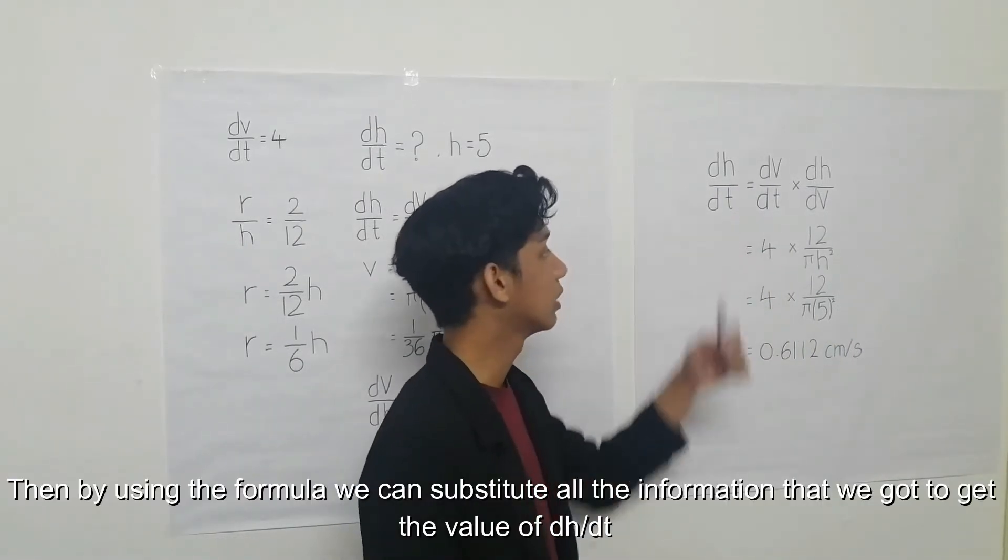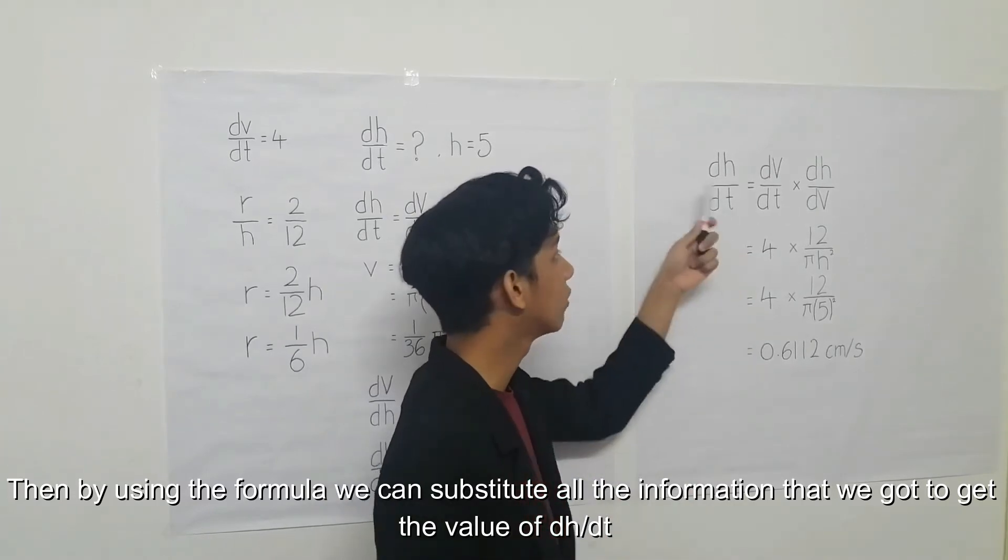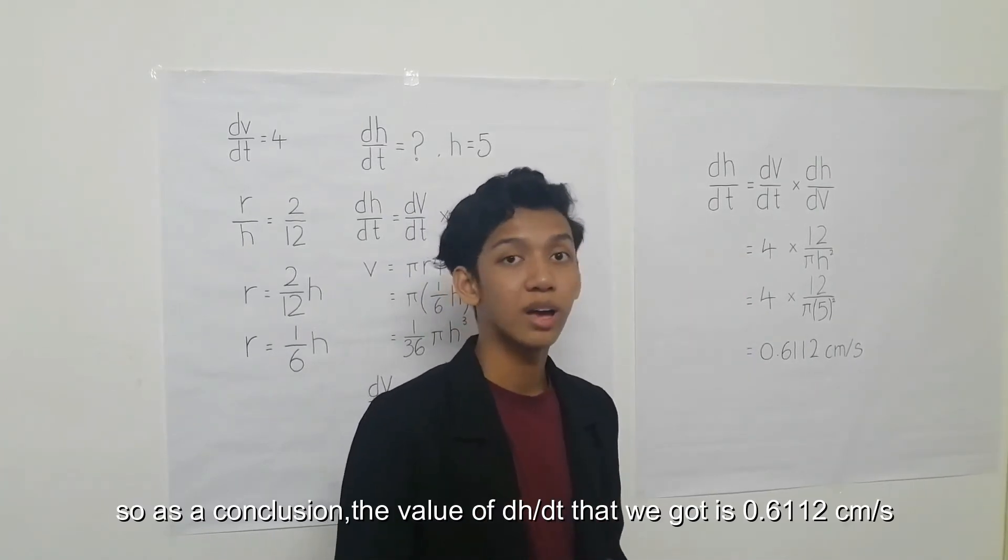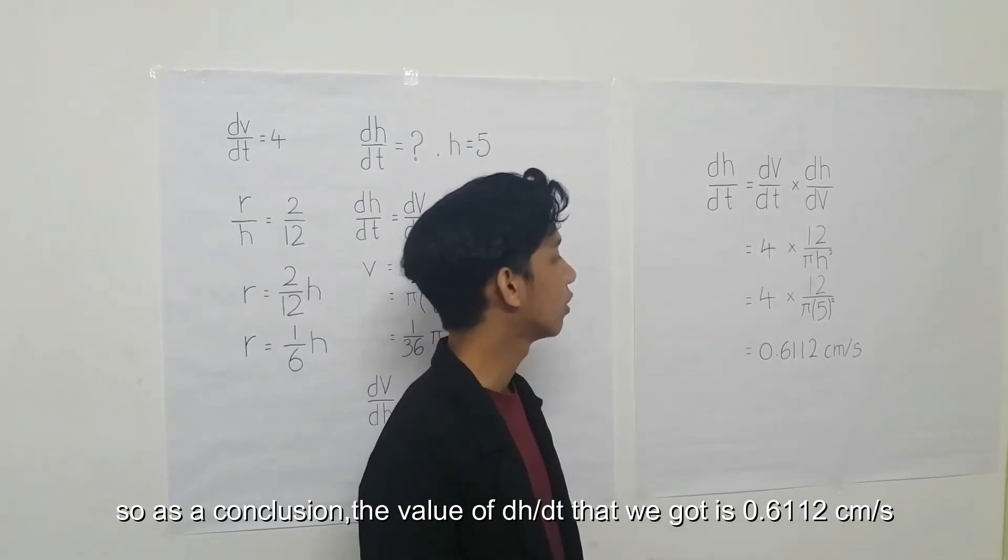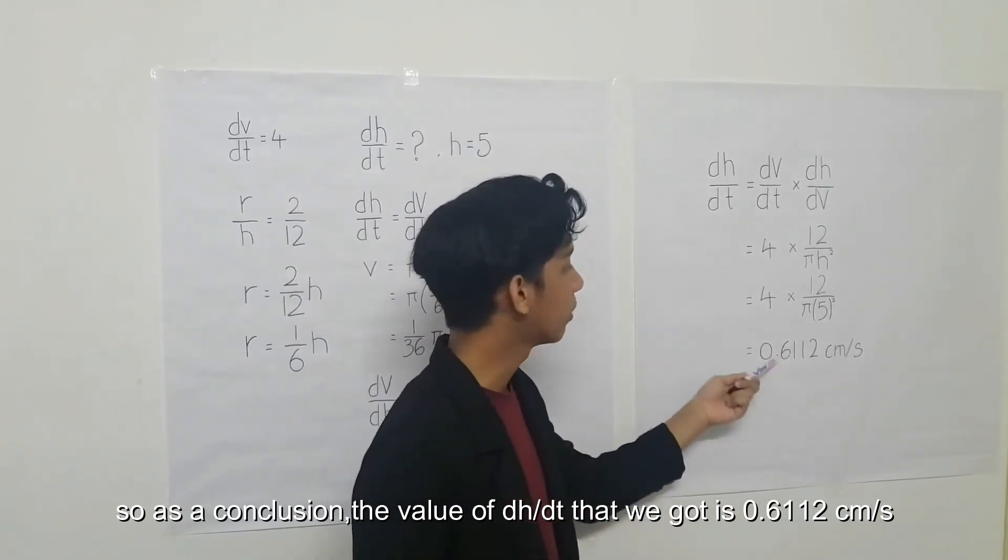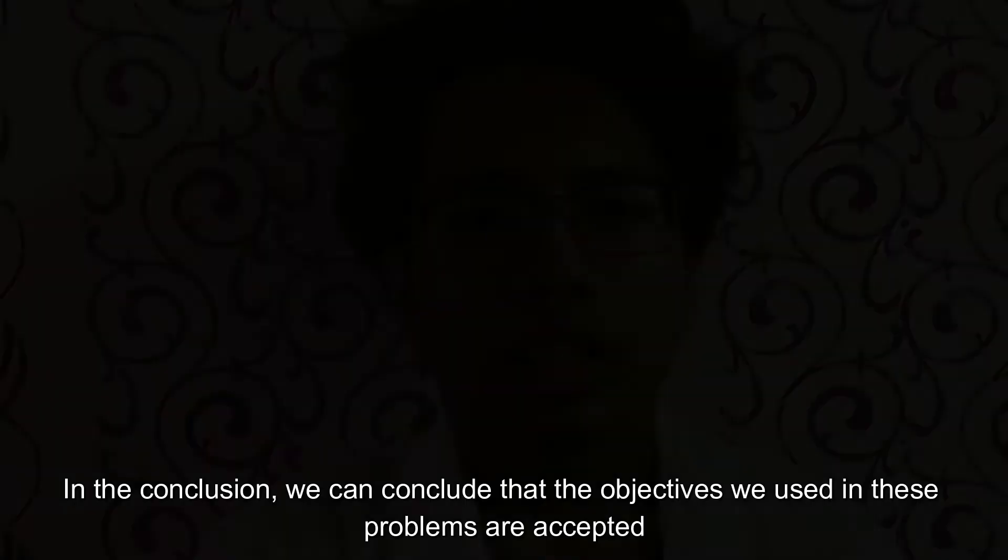Okay, then by using this formula, we can substitute all the information that we got to get the value of dh/dt. So, as a conclusion, the value of dh/dt that we got is 0.0612 cm per second.